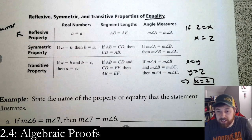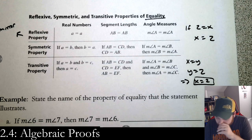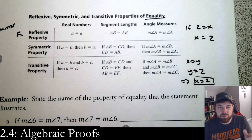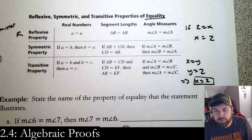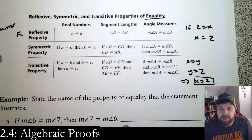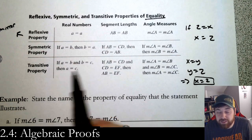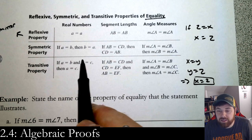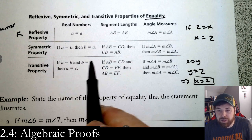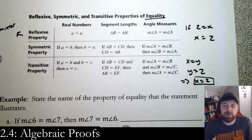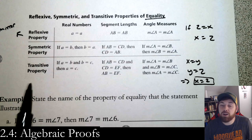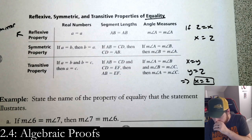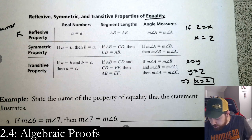If you're having trouble distinguishing the transitive property from the substitution property, that's fine — they're commonly confused. For the transitive property to work, it has to be in the order: a=b and b=c, so you get a=c. If c and b are mixed around with an equal sign, you could use the symmetric property to flip them first, but generally only use transitive if it's in that order.